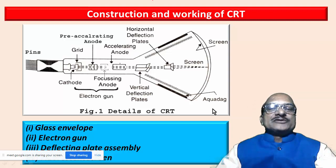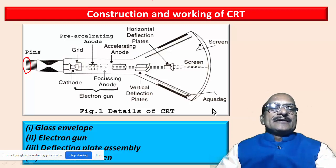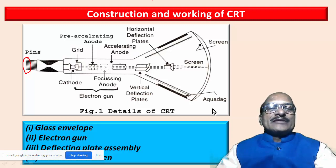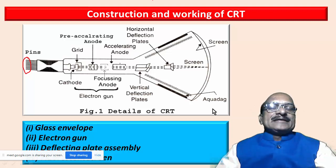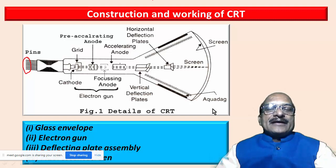As shown in the diagram, on the left-hand side inside we have the pins for electrical connection because various electrodes — like filament, control grid, pre-accelerating anode, focusing anode, accelerating anode, and deflecting plates — are mounted inside this conical-shaped glass envelope. It is an evacuated tube — there is no air inside, air is removed from this funnel-shaped glass tube, so a vacuum exists inside this glass tube.